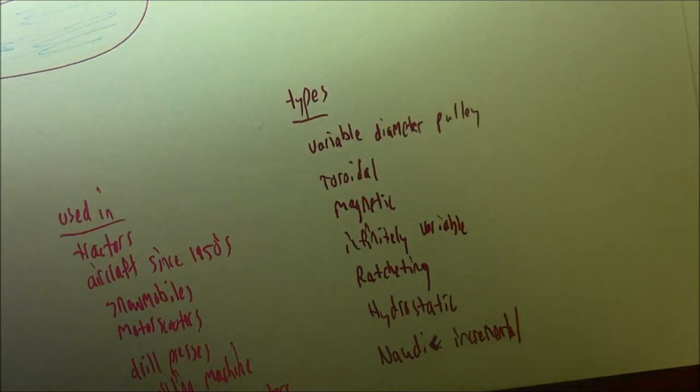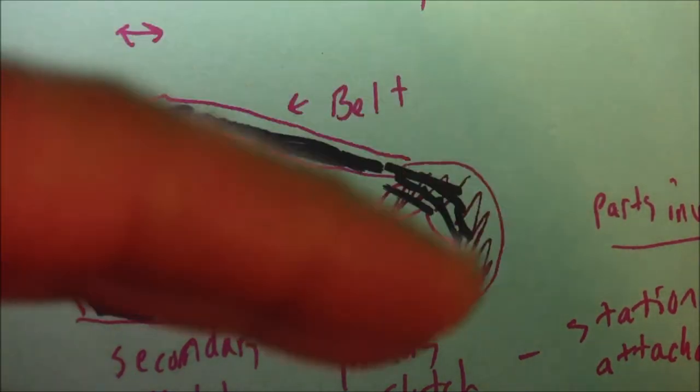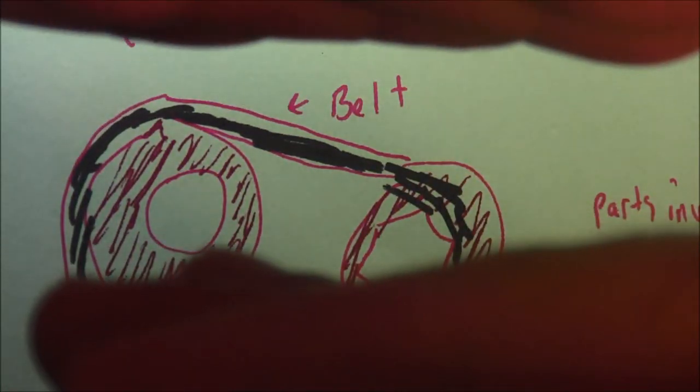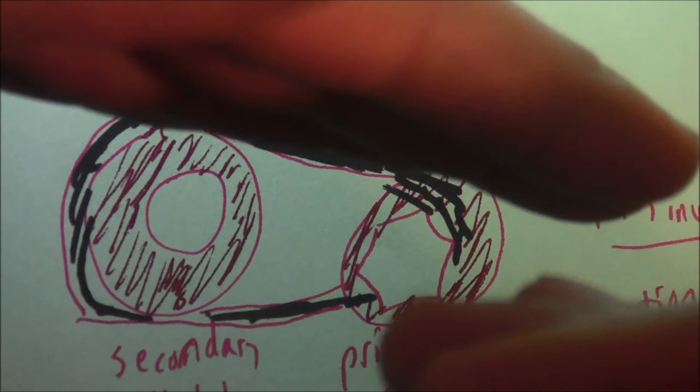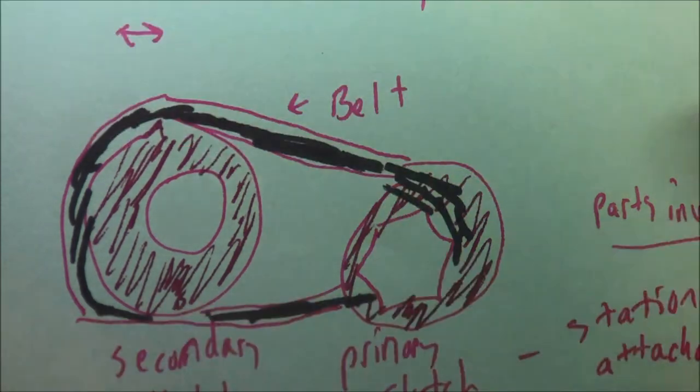Some continuous variable transmissions have what you call a movable sheave. A sheave is basically a pulley. You have the stationary sheave and then you have the movable sheave. The movable sheave is the one that moves back and forth. There's usually a flyweight involved, and as you drive and the torsion effects occur, it'll move your arm and move them closer together, which makes the belt have a ratio shift.